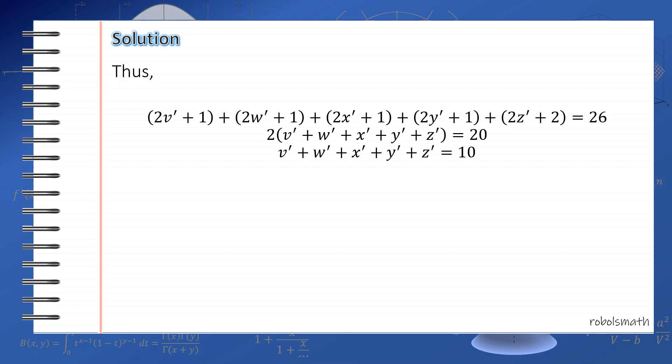Now, since all of them are allowed to be 0, then the number of solutions is readily evaluated using stars and bars. Again, we have 5 variables here and the right-hand total is 10. Therefore, the number of solutions is (10 + 5 - 1) choose (5 - 1), which is simply (14 choose 4). This value is equal to 1001.